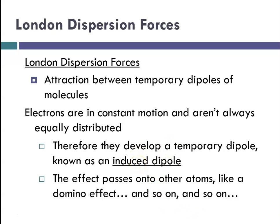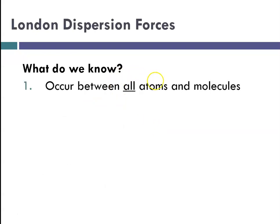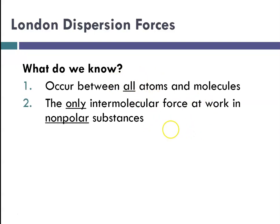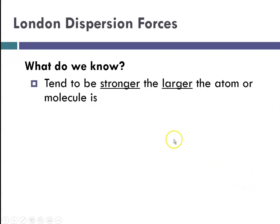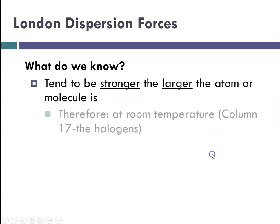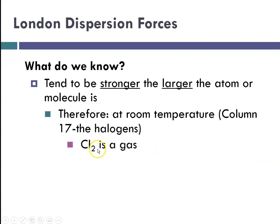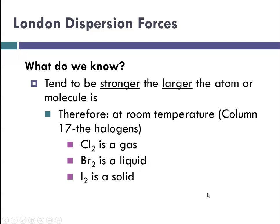The molecule comes near another molecule, they repel, the electrons get away from each other, and then the electrons go back where they were — so it's like a domino effect. London dispersion forces occur between all atoms and molecules, they are the only intermolecular force at work in nonpolar substances, and they are relatively weak. They tend to be stronger as the molecule gets larger. For example, at room temperature, looking at the halogens in group 17: chlorine is a gas, bromine — much bigger — is a liquid, and iodine is a solid at room temperature. That is the result of London dispersion forces as molecules get larger, going from gas to liquid to solid.